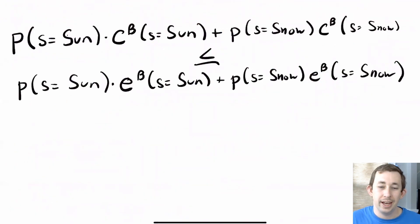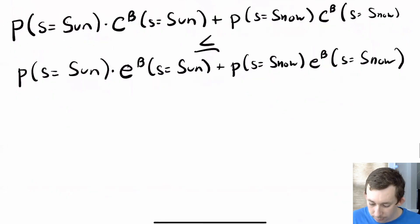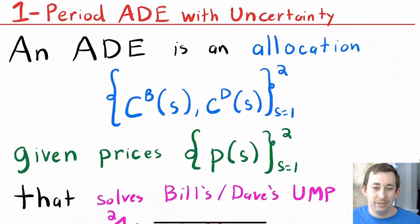So what I've done here is I've just written out that budget constraint fully so that we can see it. Note that this line is his expenditure. This is how much he's going to spend. It's going to be less than or equal to his wealth. Notice that Bill gets zero coconuts if it's snowy and two coconuts if it's sunny. So really we can just take this whole thing out because the worth of his endowment is only worth something when it's sunny.